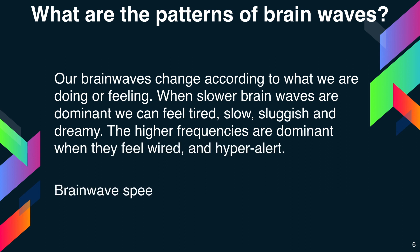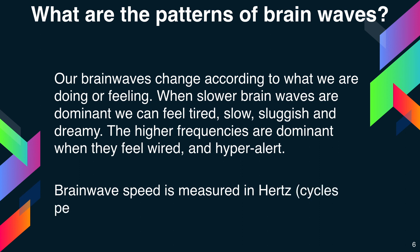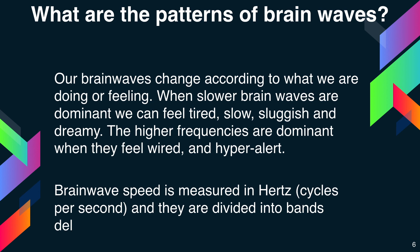Brain wave speed is measured in hertz — cycles per second — and they are divided into bands delineating slow, moderate and fast waves.